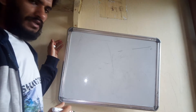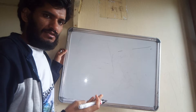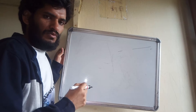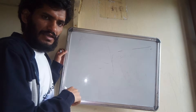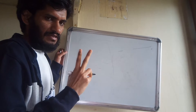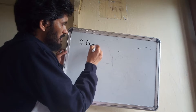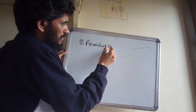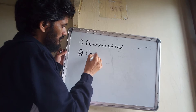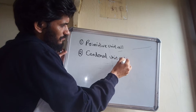Good morning students. In previous classes we learned about crystal lattice, unit cells, and two-dimensional arrangements of crystal lattices. We also gave a definition for unit cells. Basically, unit cells are divided into two types: the first is primitive unit cells, and the second is centered unit cells.